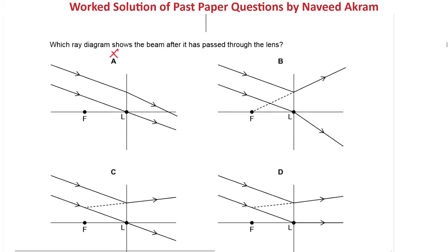In option B, the rays are diverging, but these are parallel rays that are not parallel to the principal axis. They will diverge from a point which is at the focal plane but not the principal focus. In the diagram they appear to meet at a point not on the focal plane. Another problem with option B is that the ray passing through the principal focus is not going straight as it should. So option B is also not the right answer.